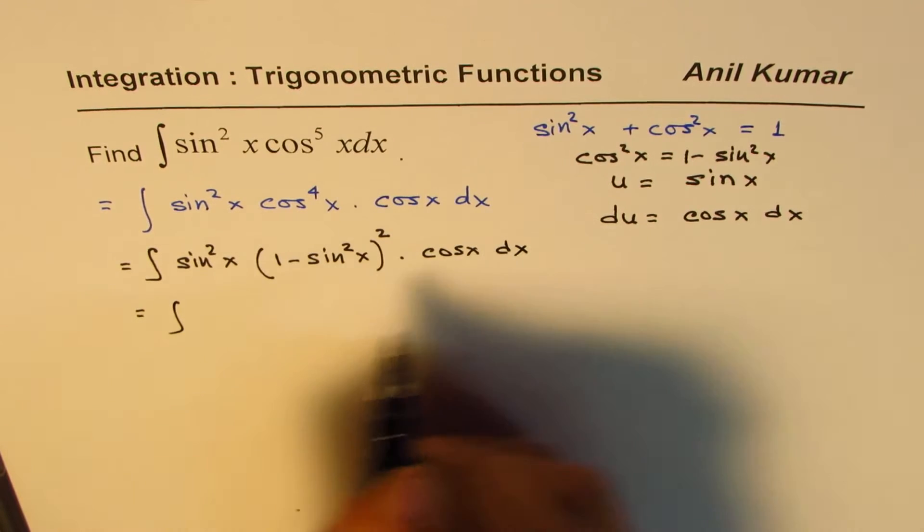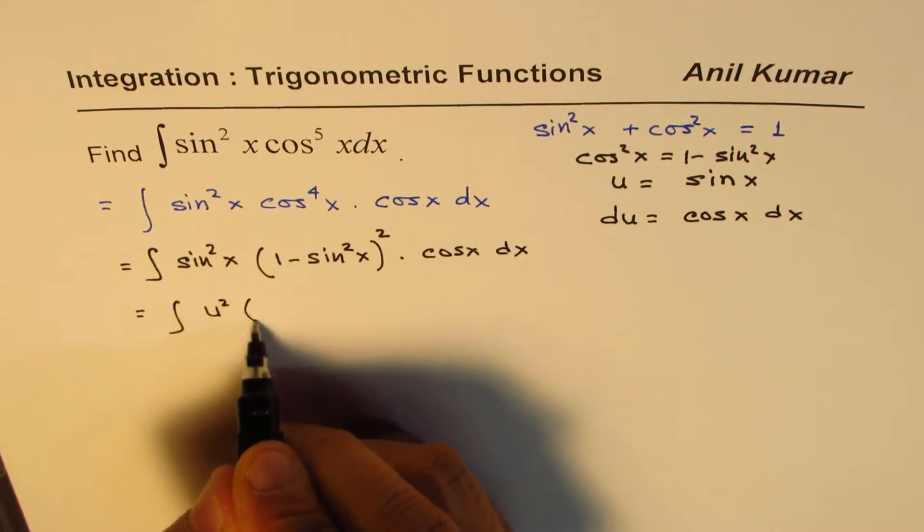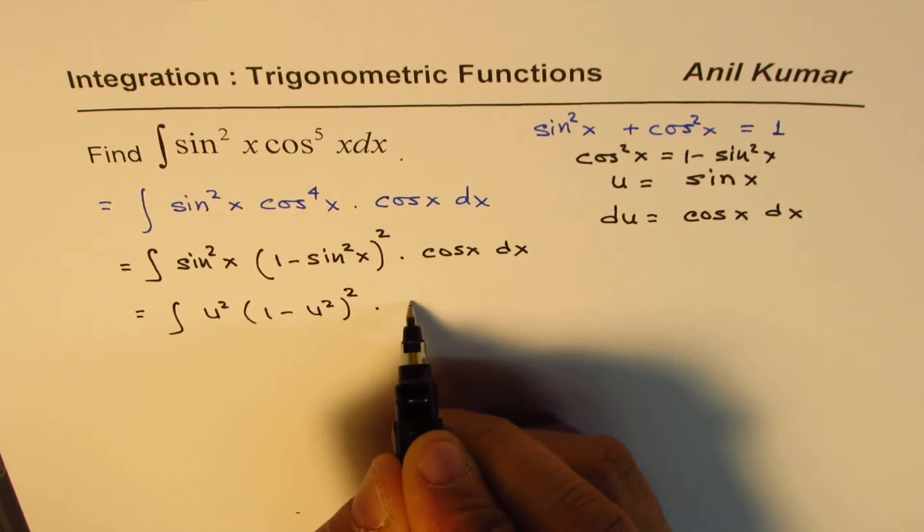Now we can substitute u for sine, so we get u square, and we have 1 minus u square to the power of 2, times du.